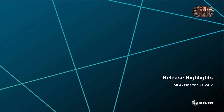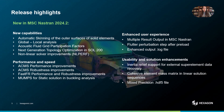Let's take a look at the highlights for the MSC Nastran 2024.2 release. We've added new capabilities like the automatic scanning of the outer surfaces of solid elements, global-local analysis, acoustic fluid grid participation factors, and we're also launching the first release of the next-generation topology optimization in Solution 200. We've also done improvements in the new non-linear solver called NLPerf in Solution 400. For performance and speed, we've improved significantly the robustness and performance of the ACMS and FastFR modules, and we also added the MAMPS solver for the static solution in buckling analysis.